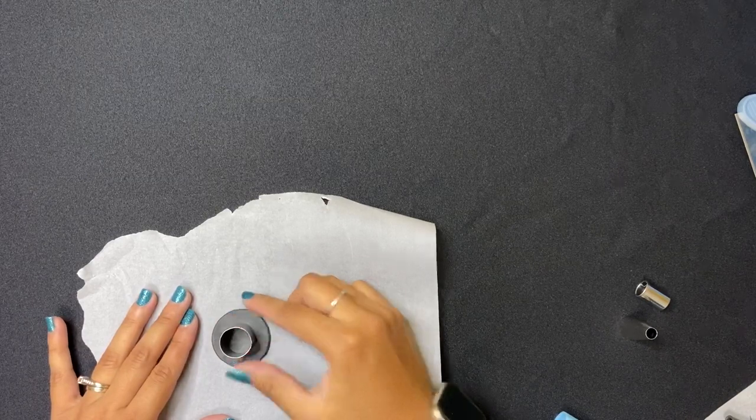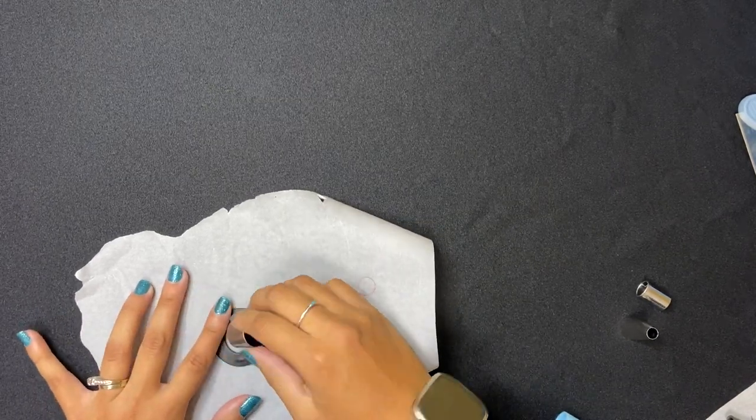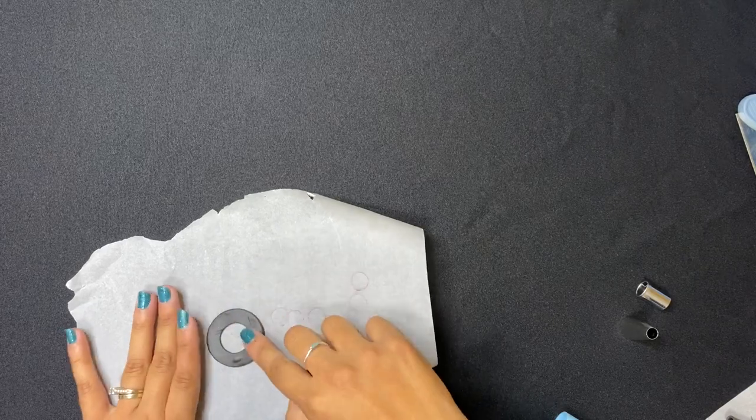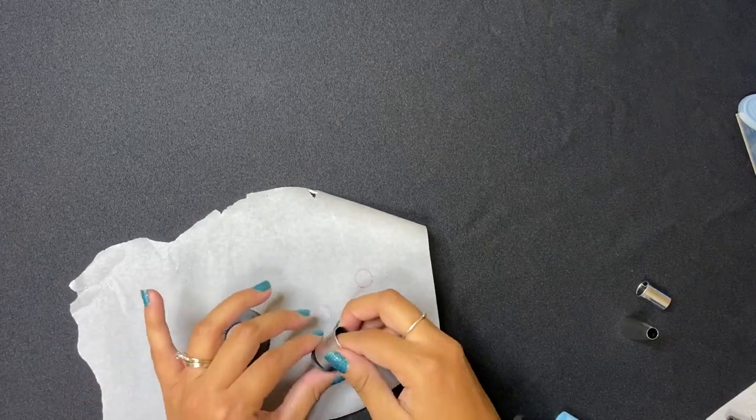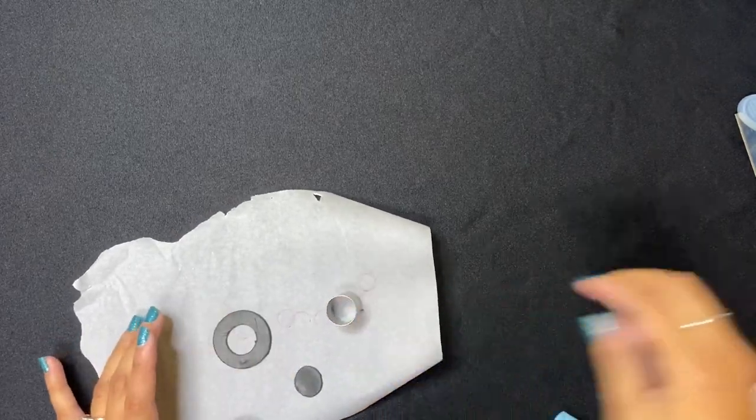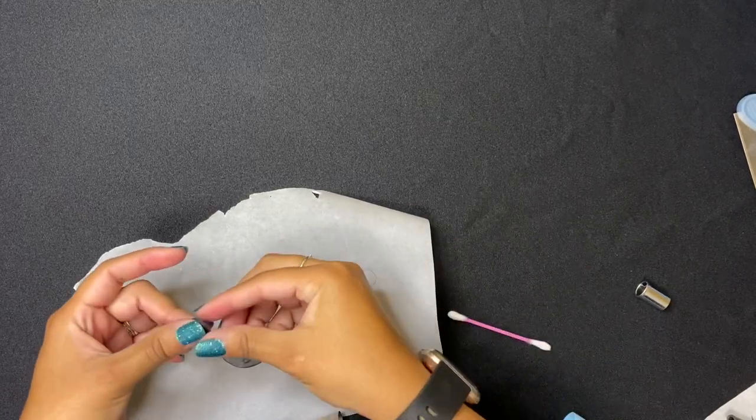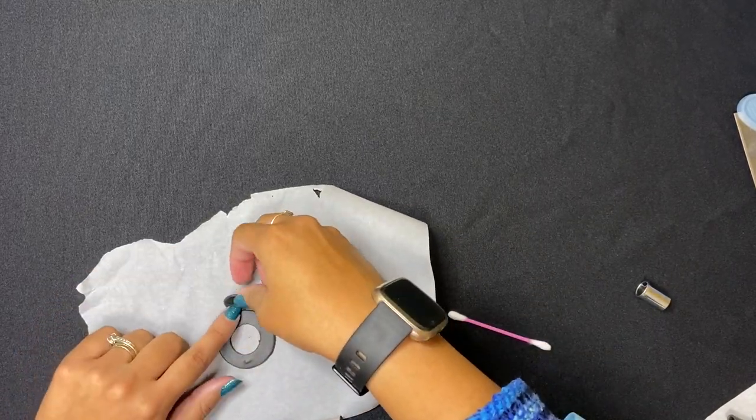Now we're going to be cutting out the middle. This one is going to be another circle, about three-fourths of an inch wide. Don't throw it away because this is what we're going to be using to make the tinier black circle on top of the big black circle.